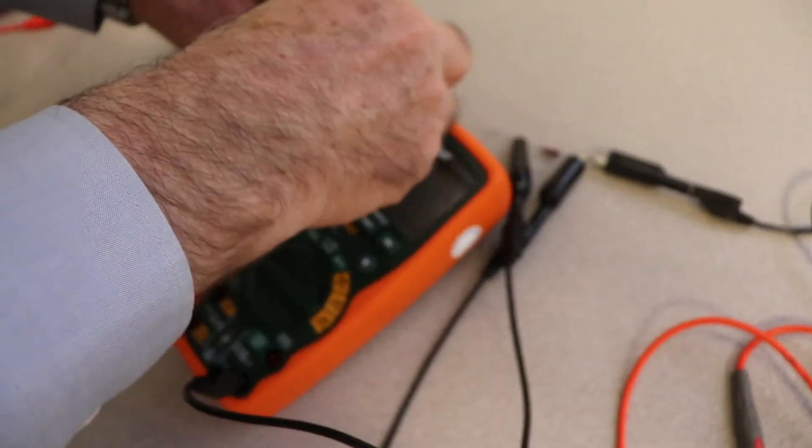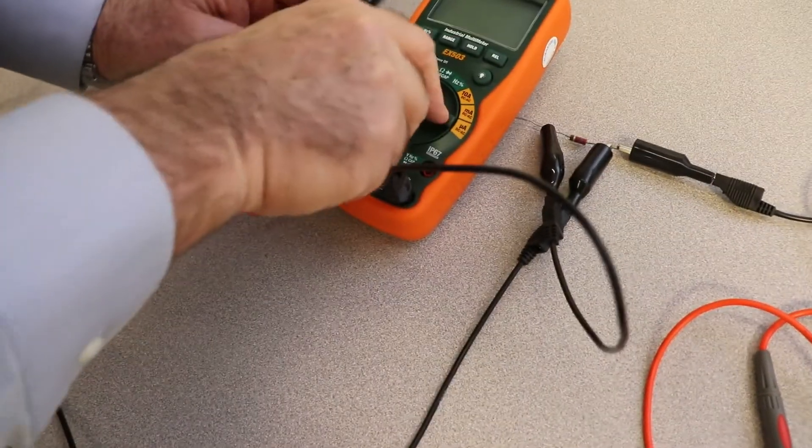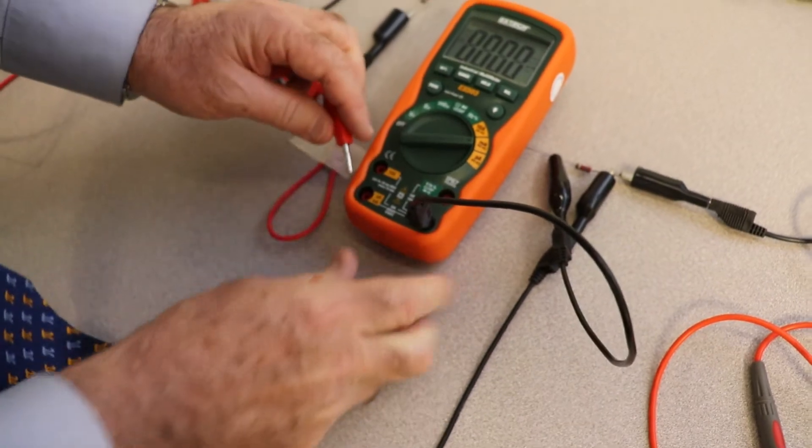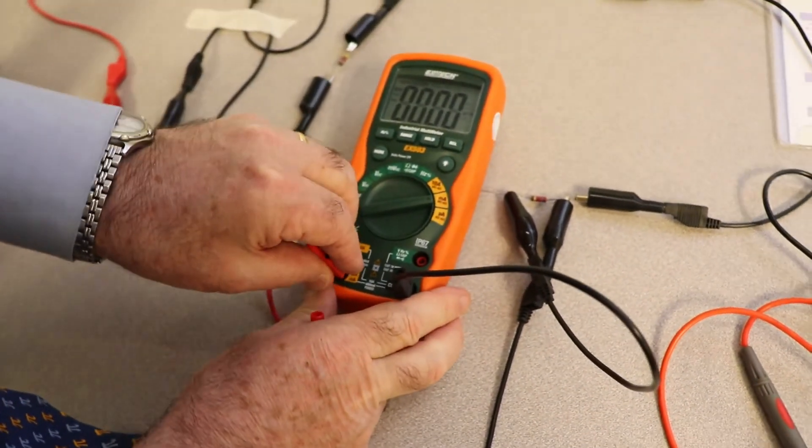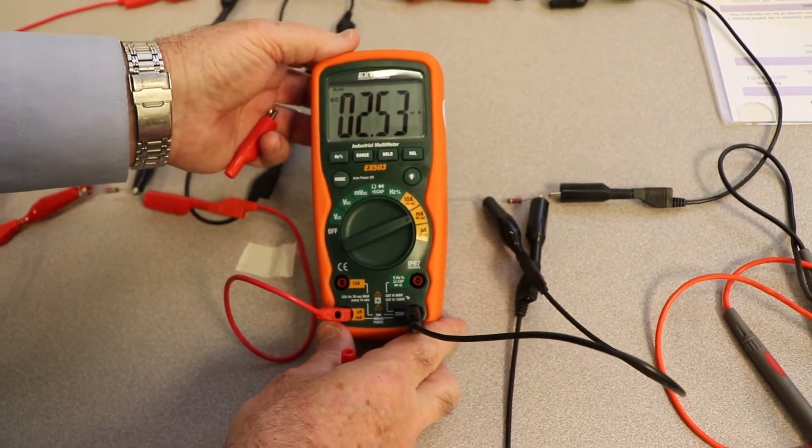And then I'm going to take off the plug, and I can just plug it right into here. I need to turn the meter on. And I can plug it in right there. And you can see 2.53 milliamps.